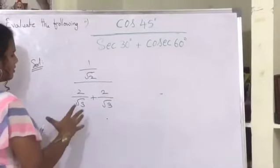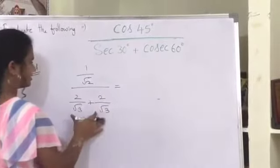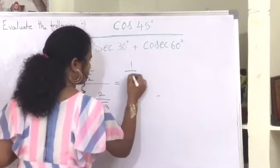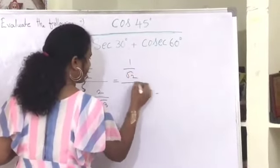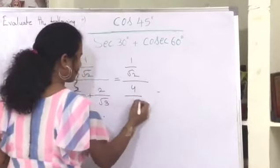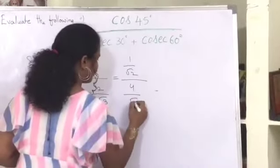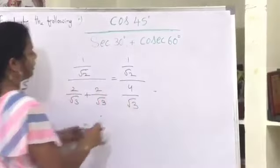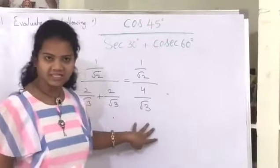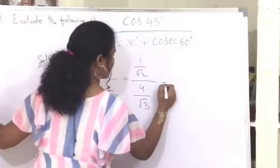To simplify, we can write 1 by root 2 divided by the denominator. Since 2 by root 3 plus 2 by root 3 gives 4 by root 3, we now have 1 by root 2 divided by 4 by root 3.